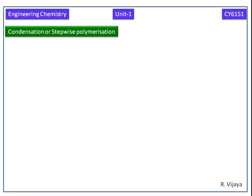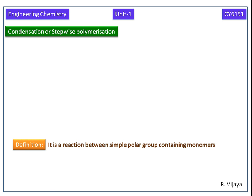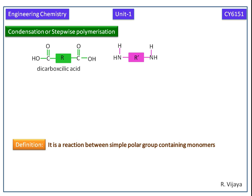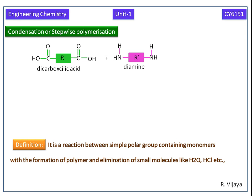Now we discuss condensation or step-based polymerization. It is a reaction between simple polar group containing monomers. Here we consider the dicarboxylic acid and diamine. In dicarboxylic acid, these carboxylic groups are polar groups. In diamine, the amine groups are polar groups. It is a reaction between simple polar group containing monomers with the formation of polymer and elimination of small molecules.